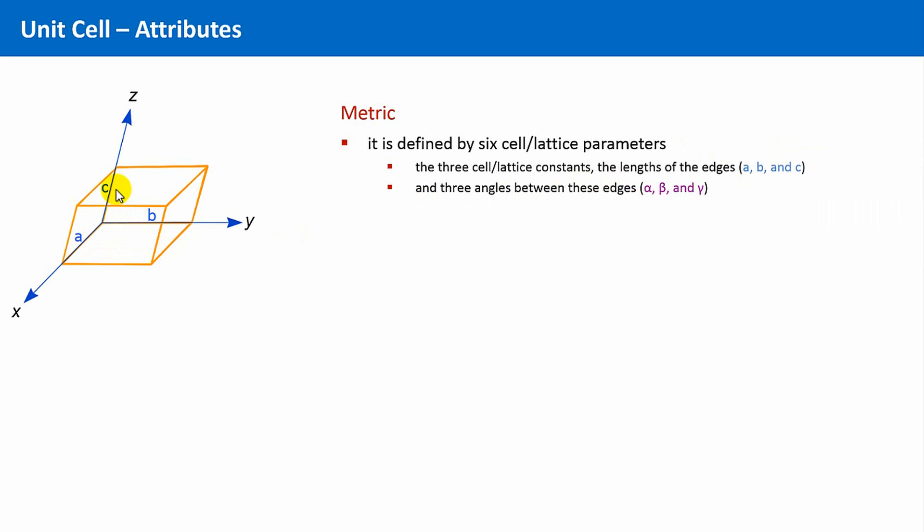Second, the angles between these edges or faces. Alpha defines the angle between edge b and c. Beta is the angle between a and c. And finally, gamma is the angle between a and b.